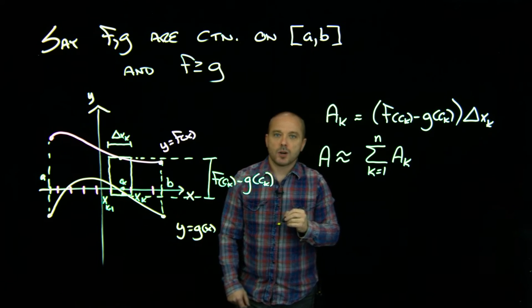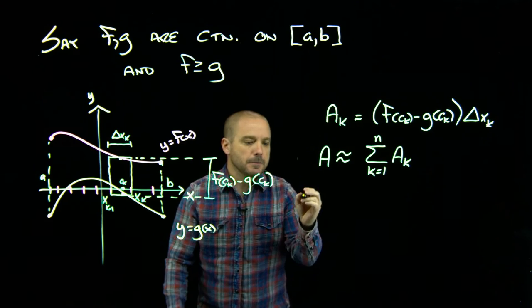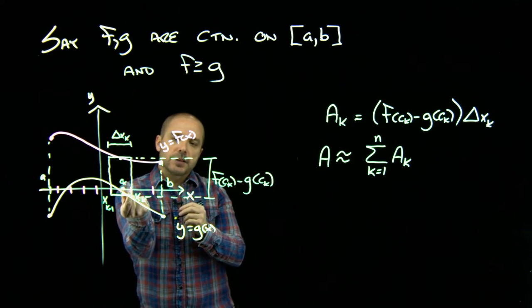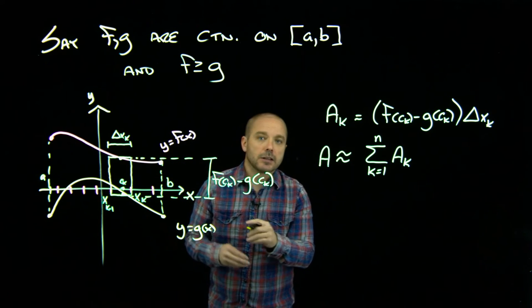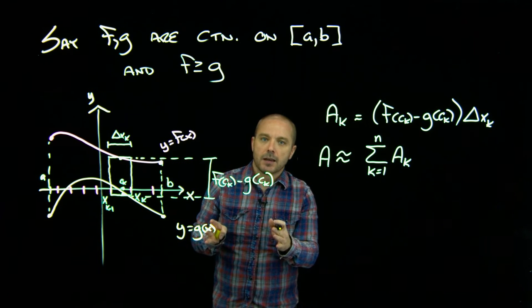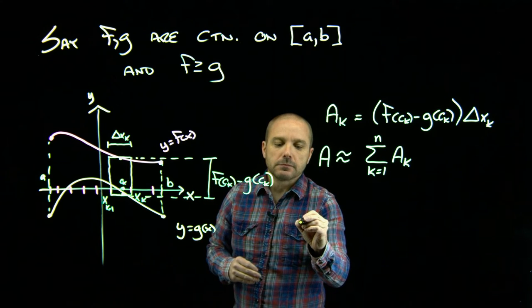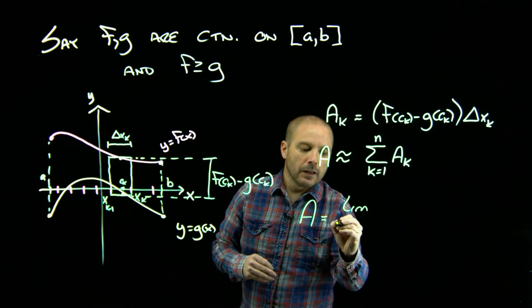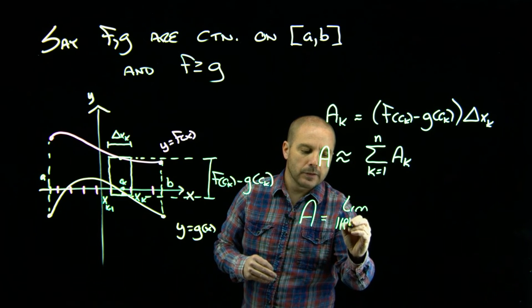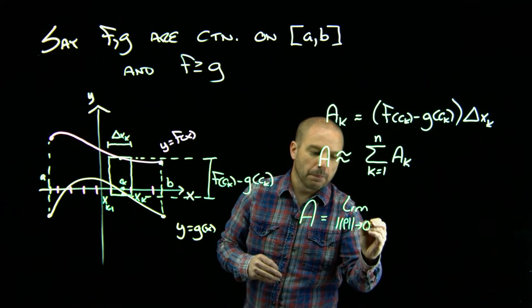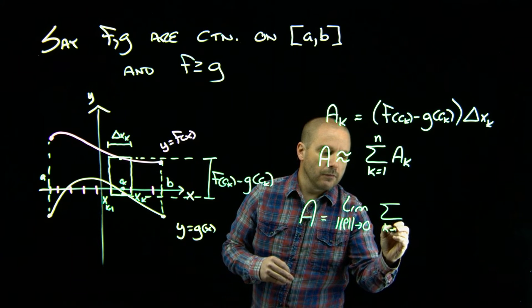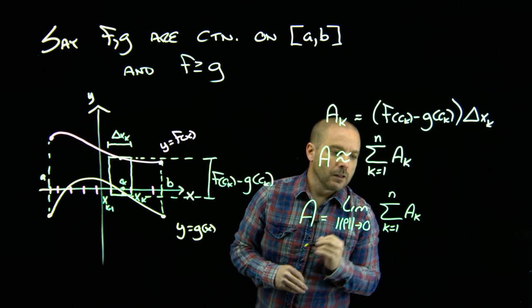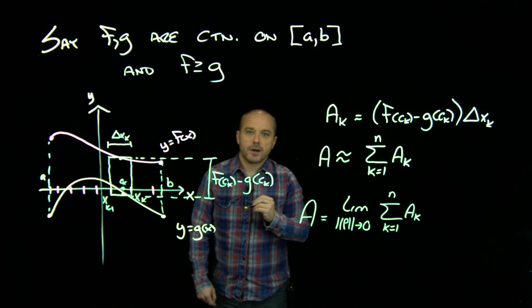And then as we saw before with just area under the curve, we would like to shrink these rectangles and make them skinnier and skinnier so that they better and better approximate that area. So we take the limit as the norm of our partition goes to zero of the sum of all of our rectangles.